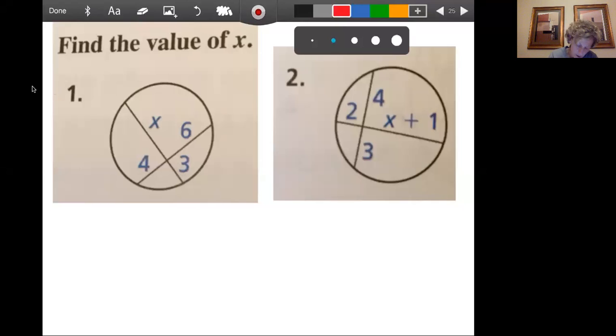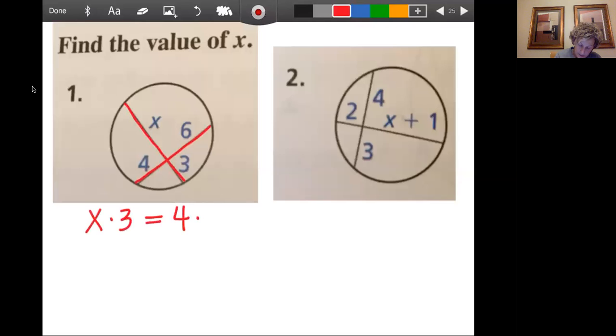In this first one, what we see are two chords that intersect inside the circle. When two chords intersect inside the circle, something really cool happens. And that is that X times three is going to equal four times six. The product of each part of the segment equals the product of each part of the other. And I've seen it done before where you can go like this, that this product will equal this product. And it makes kind of a giant multiplication symbol to help you remember.